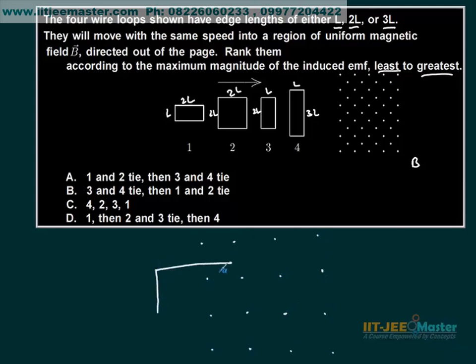When this type of loop enters, the associated flux changes. What does it depend on? It depends on area - the area inside the magnetic field. So the flux will be B field into area.